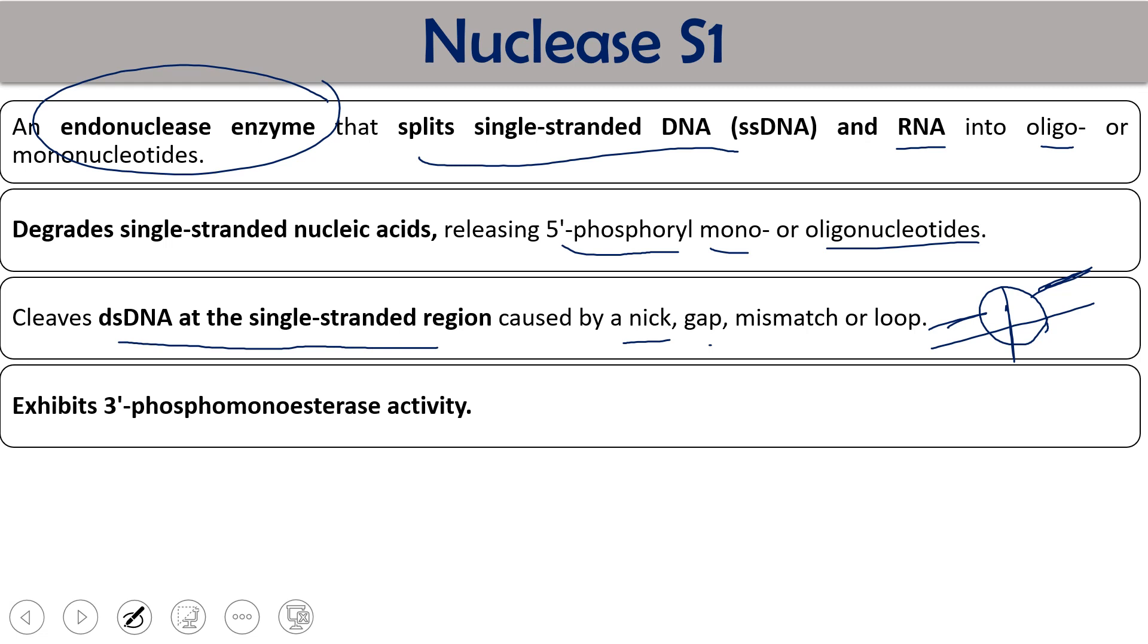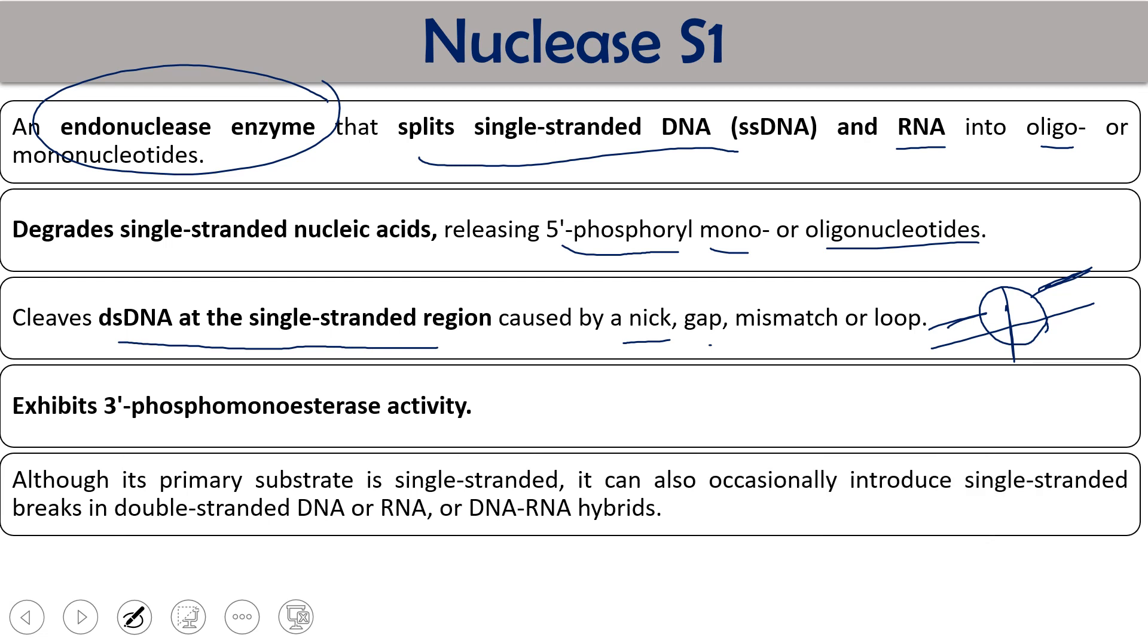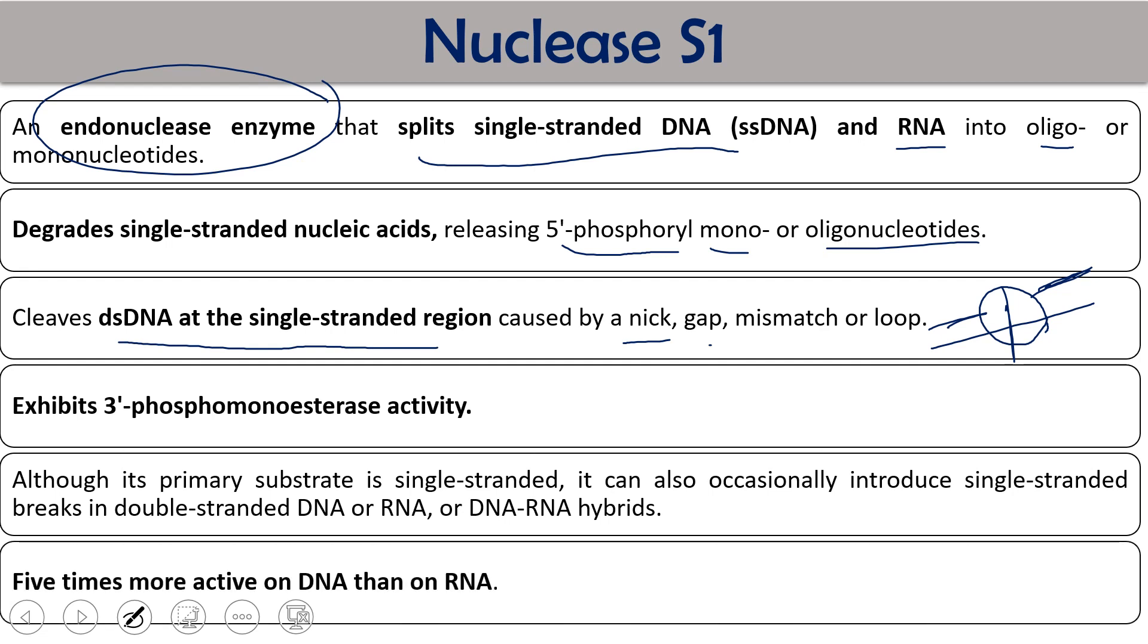It exhibits 3 prime phosphomonoesterase activity. Although its primary substrate is single-stranded, it can also occasionally introduce single-stranded breaks in double-stranded DNA or RNA or hybrid of DNA and RNA. This Nuclease S1 works both on DNA as well as RNA, but its activity is 5 times more on DNA than on RNA.